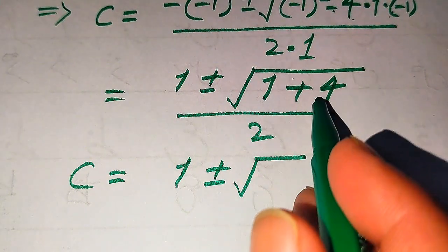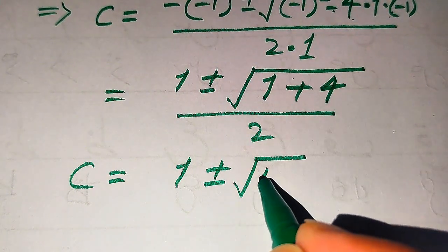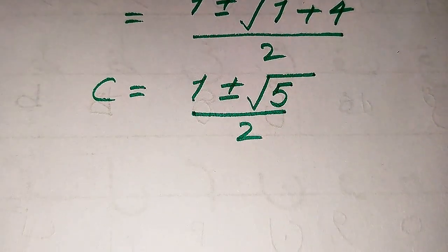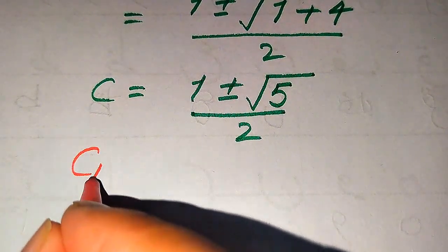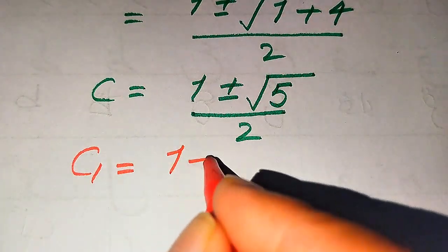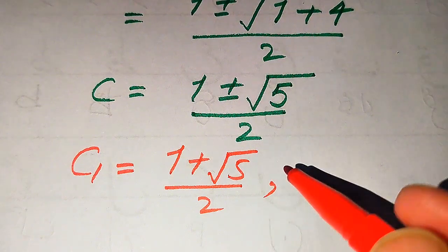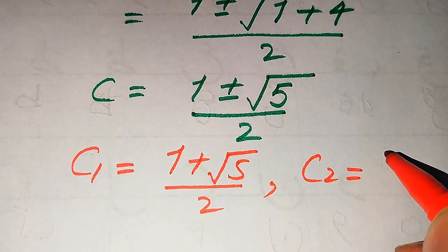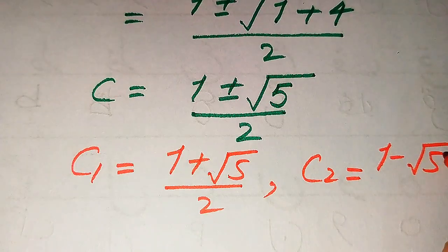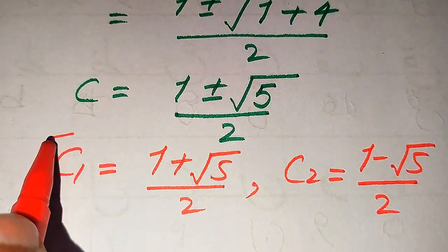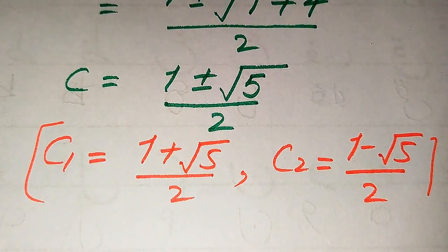After more simplification, c equals 1 plus or minus square root of 1 plus 4, which is 5, divided by 2. There are two roots of the given equation. The first root is c₁ equals 1 plus square root of 5, divided by 2, and the second root is c₂ equals 1 minus square root of 5, divided by 2. These are the two solutions of the given equation.